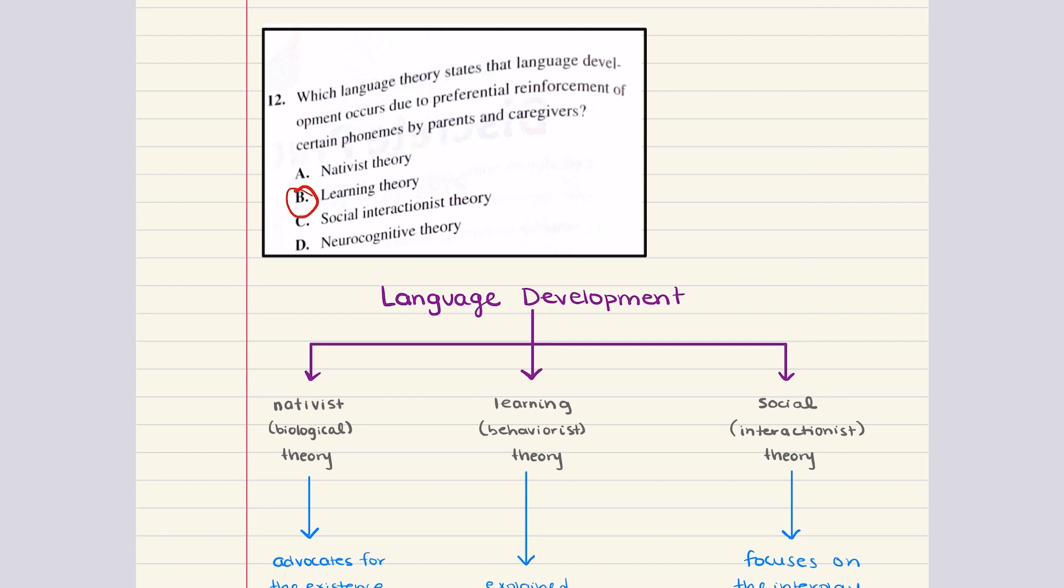Going through some of these other answer choices, nativist theory or biological theory posits a critical period during which language acquisition occurs. Social interactionist theory indicates that language develops via interaction with parents and caregivers, as well as a desire of the child to communicate. Neurocognitive theory is concerned with the subjective experience of dreaming and the physiology of dreaming. So A, C, and D do not make sense. The answer for 12 is B.